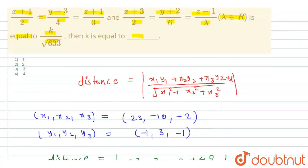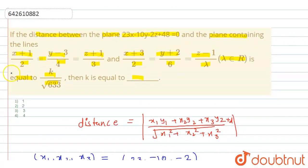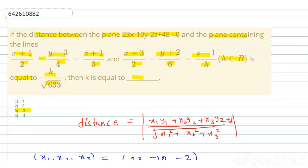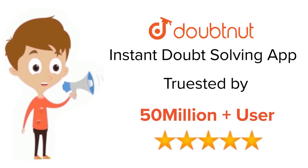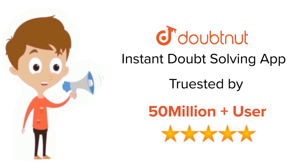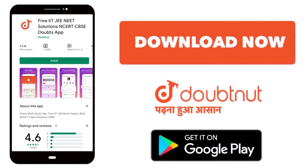We have found the value of the constant k = 3, so option three is the correct option. Thank you. For class 6 to 12, IIT JEE and NEET level, trusted by more than 5 crore students — download the Doubtnut app today.